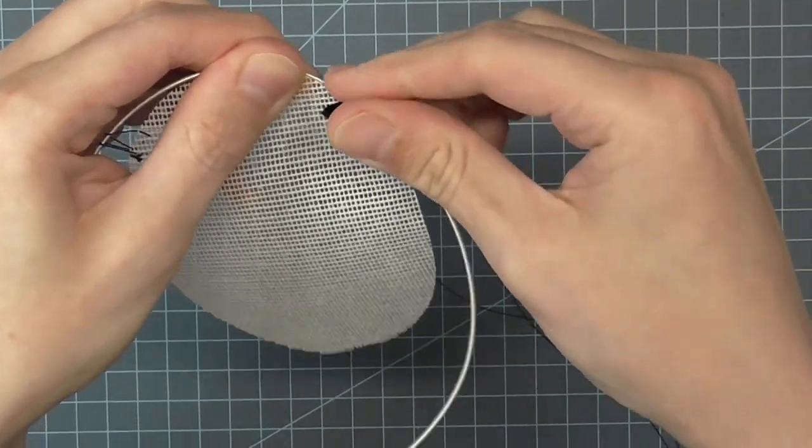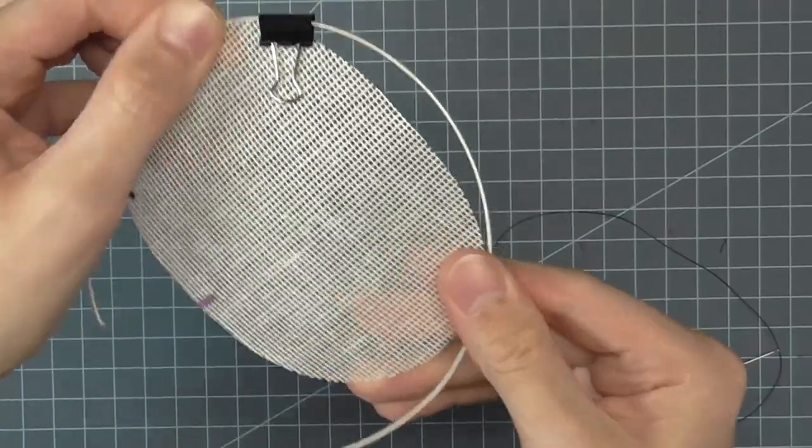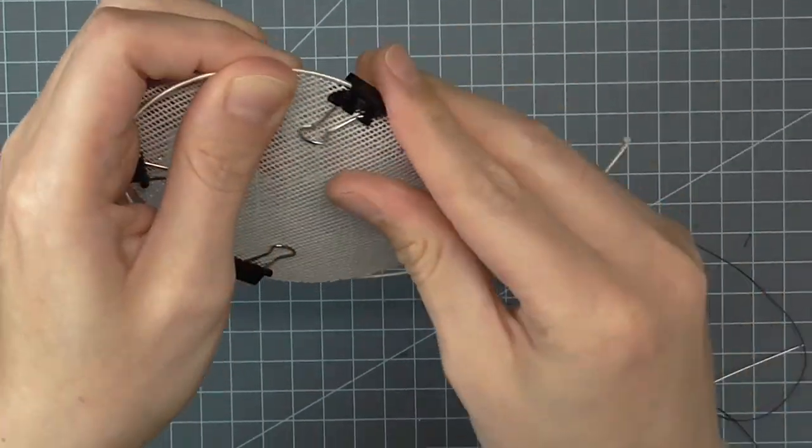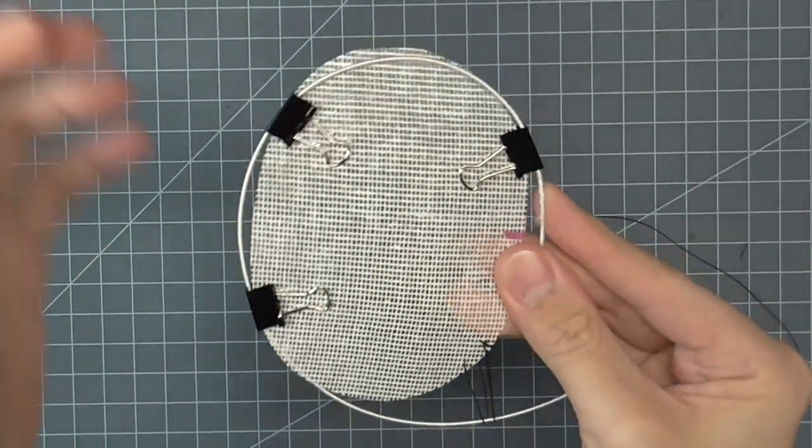If your piece is large or the wire is misbehaving, you can use binder clips to hold it against the buckram edge. I usually don't do this on small pieces.